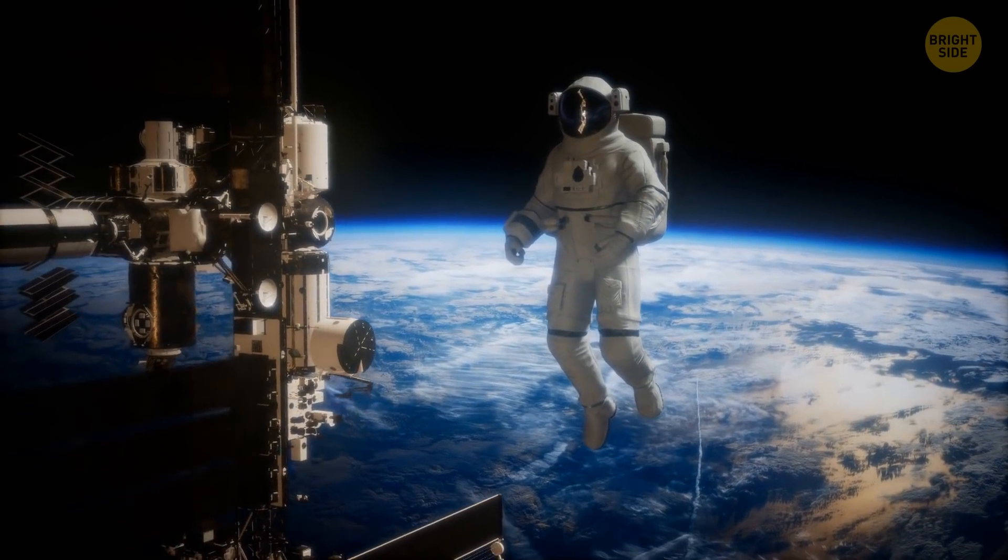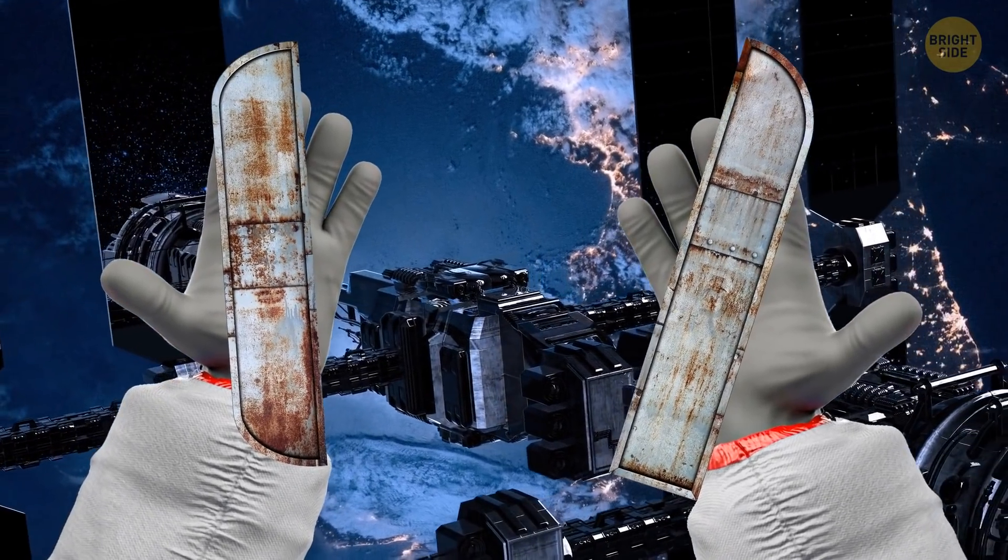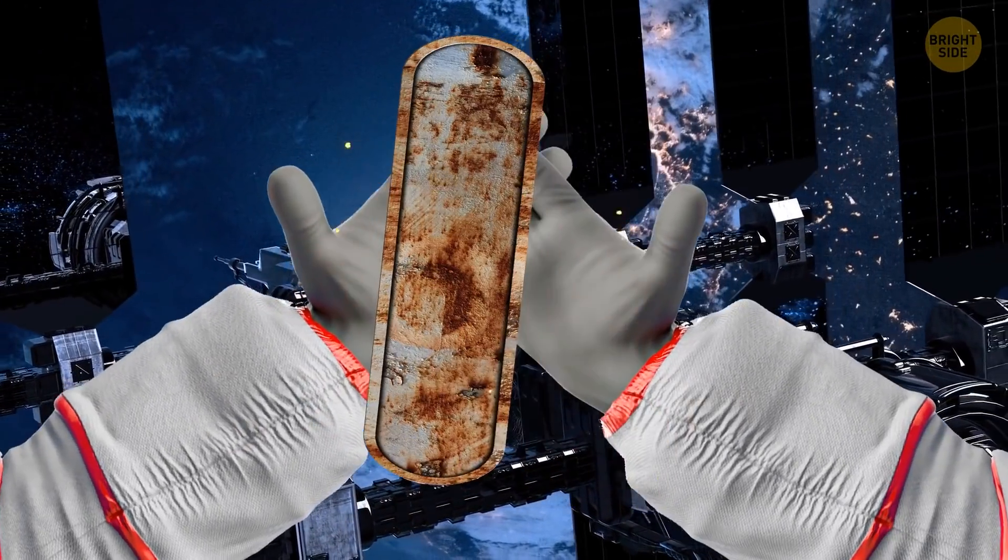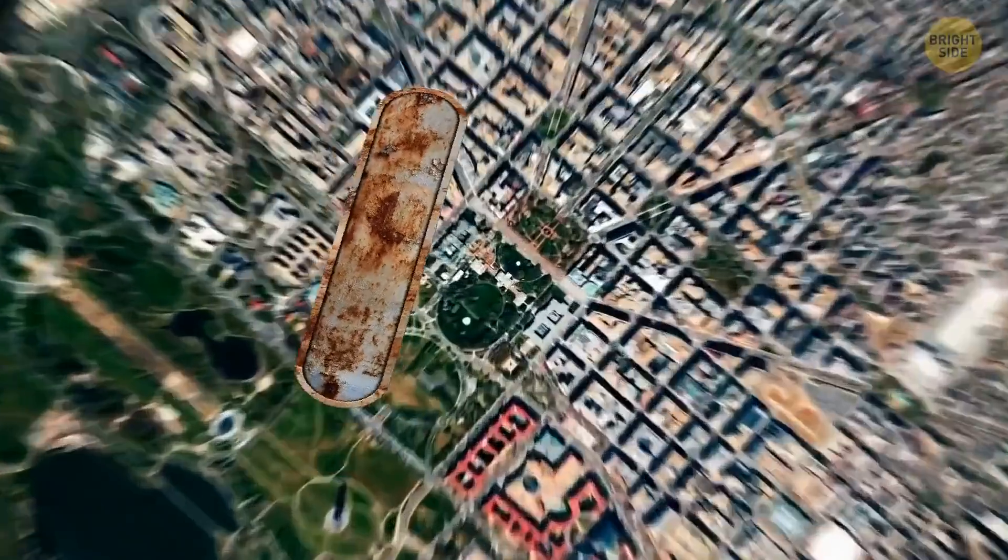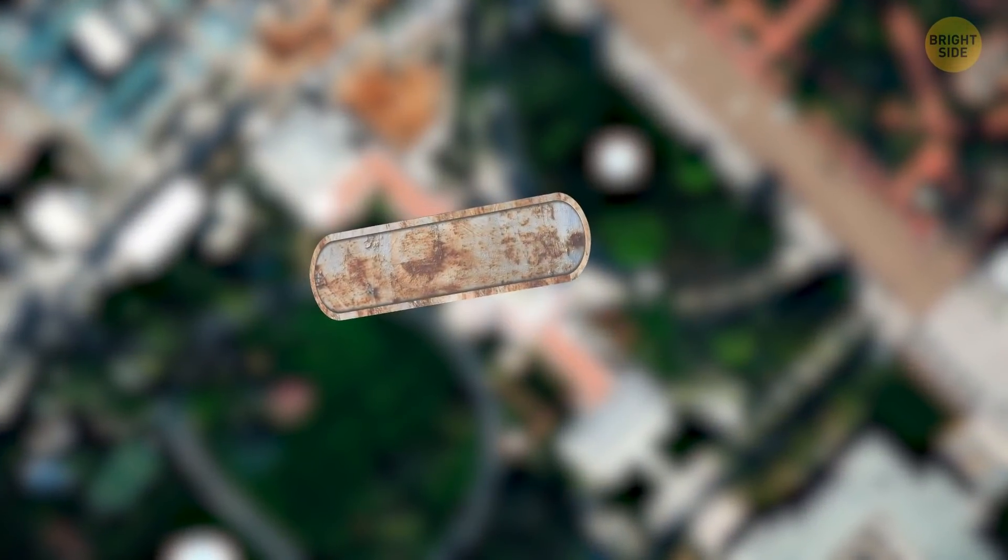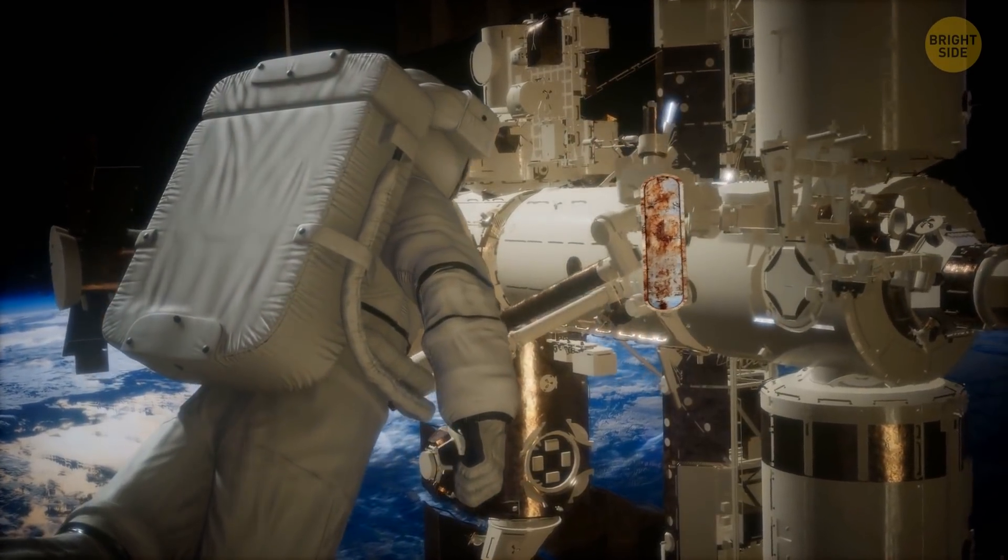In outer space, you'd be strong enough to weld two pieces of metal together with your own hands. Okay, it has nothing to do with your strength. You could just press them together with no effort, and that's it. Oxygen in our atmosphere makes a thin layer on the surface of the metal. It's like a barrier, which is why such a trick is impossible on Earth but perfectly logical in outer space.